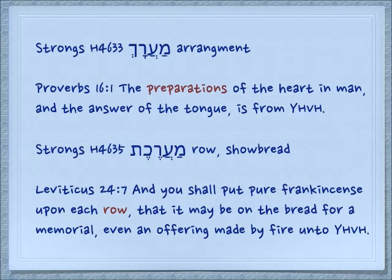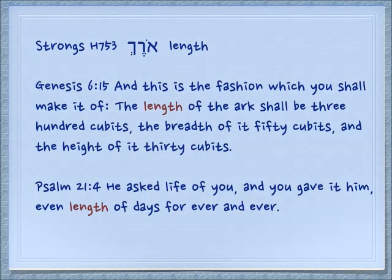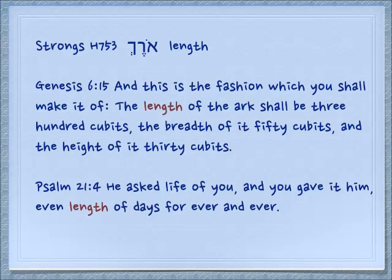Moving on to the second root, with the aleph — orech — means the length. This can be either in space or in time. Genesis 6:15: 'And this is the fashion which you shall make of it. The length of the ark shall be 300 cubits, the breadth of it 50 cubits, and the height of it 30 cubits.' Psalm 21:4: 'He asked of life, and you gave it to him, even length of days, forever and ever.'